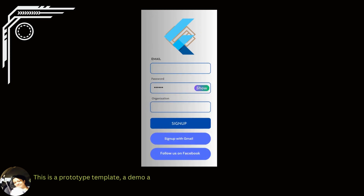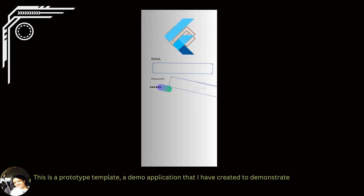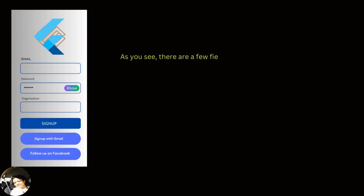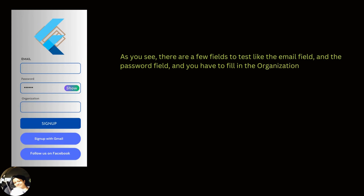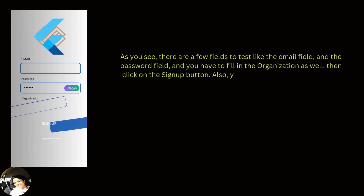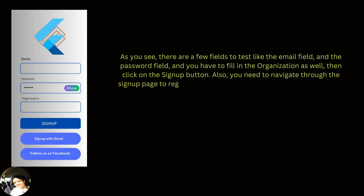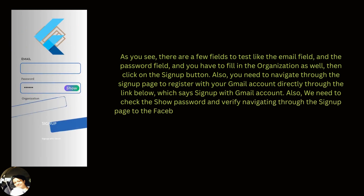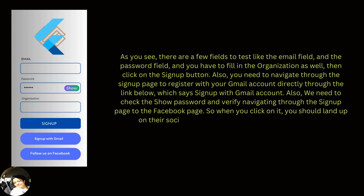This is a prototype demo application I created to demonstrate the signup page fields. There are a few fields to test: the email field, the password field, and the organization field, then click the signup button. You can also register with your Gmail account directly through the link below. We need to check the show password option and verify navigating from the signup page to the Facebook page — when you click on it you should land on their social media page.